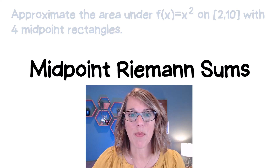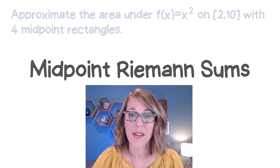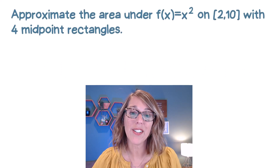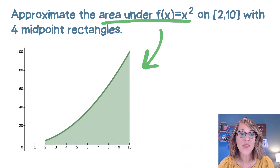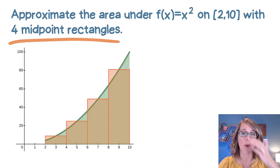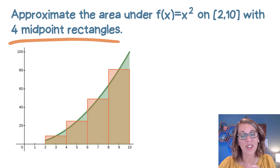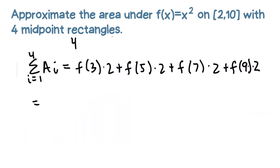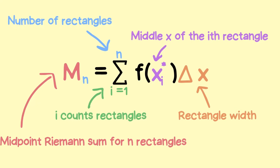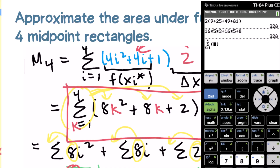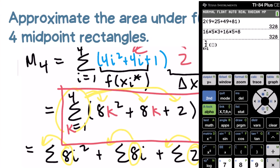Let's learn all about midpoint Riemann sums. We're going to look at the area under the curve x squared between 2 and 10 with four midpoint rectangles. I'm going to show you three different ways to do this: we'll calculate the areas and add them up, use the Riemann sum formula, and then I'll show you how to plug it into your calculator.